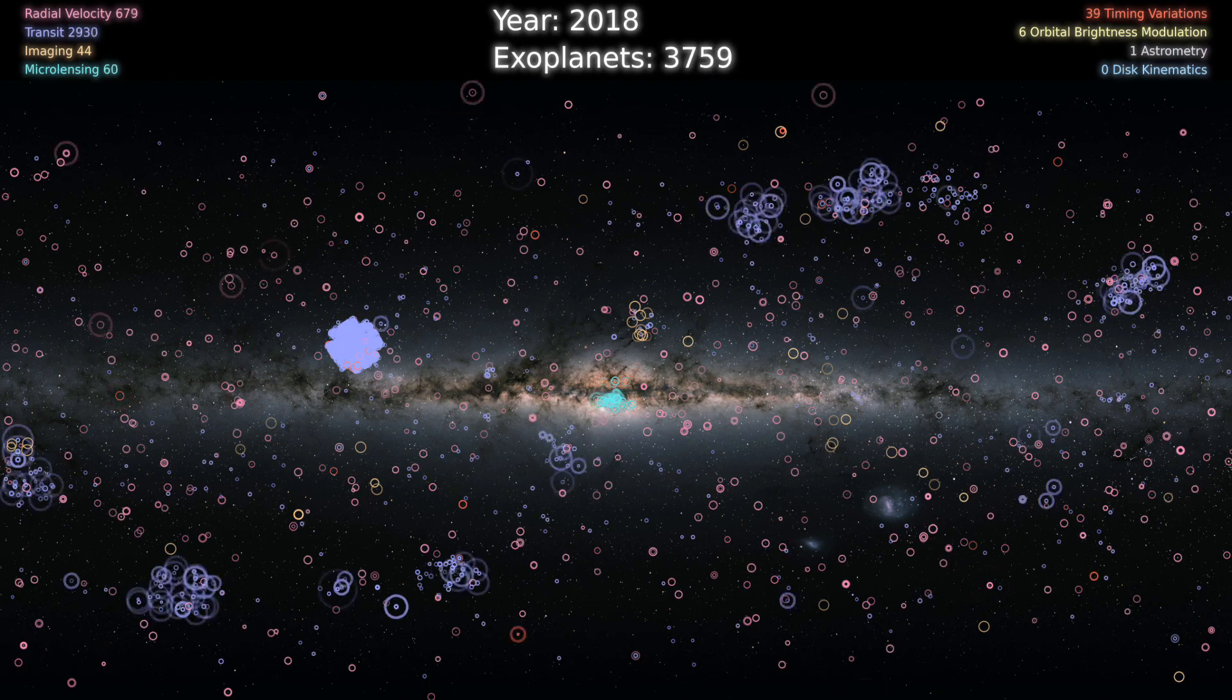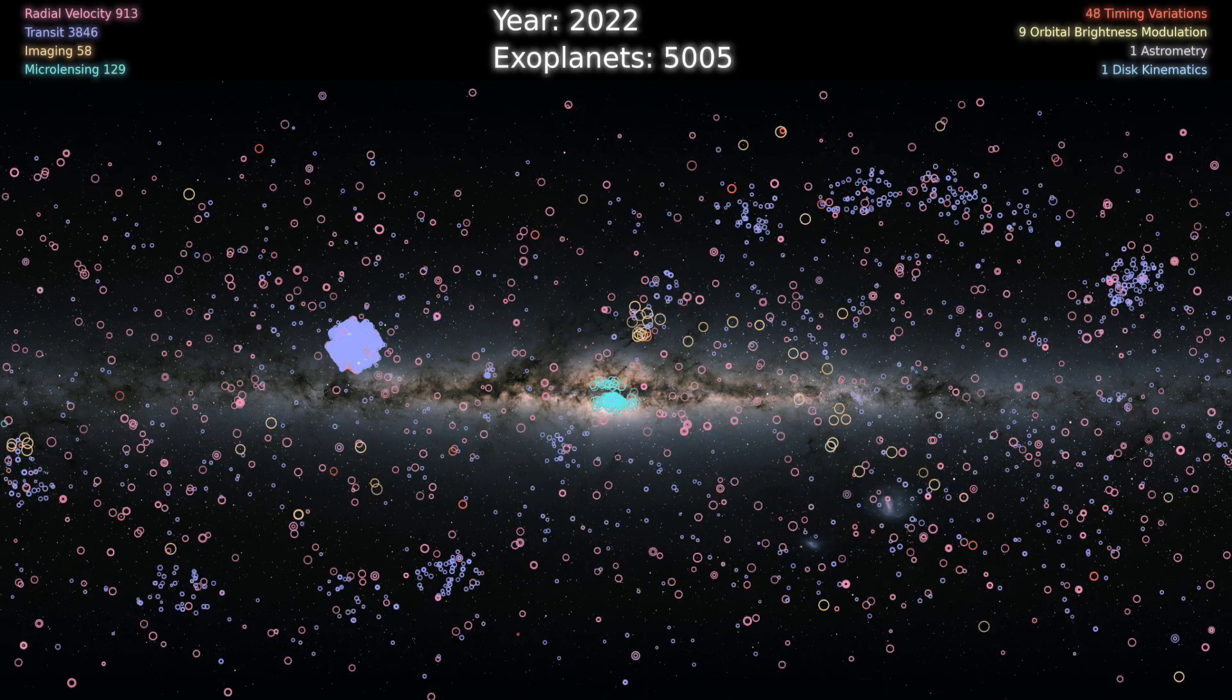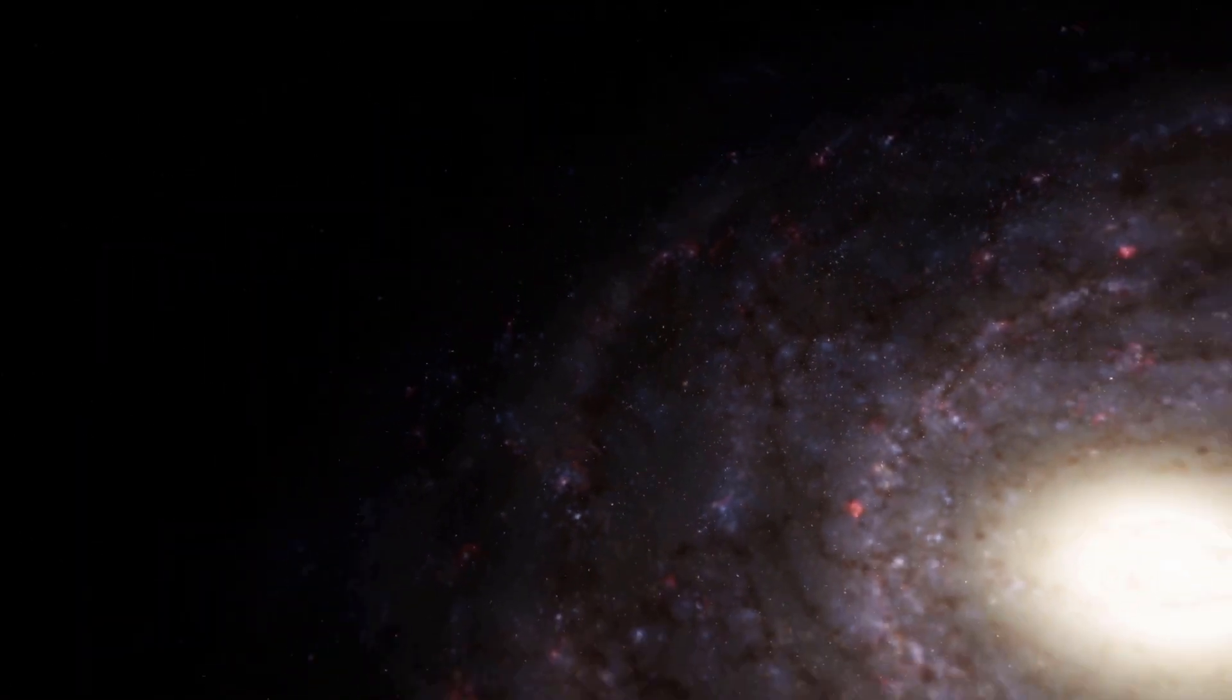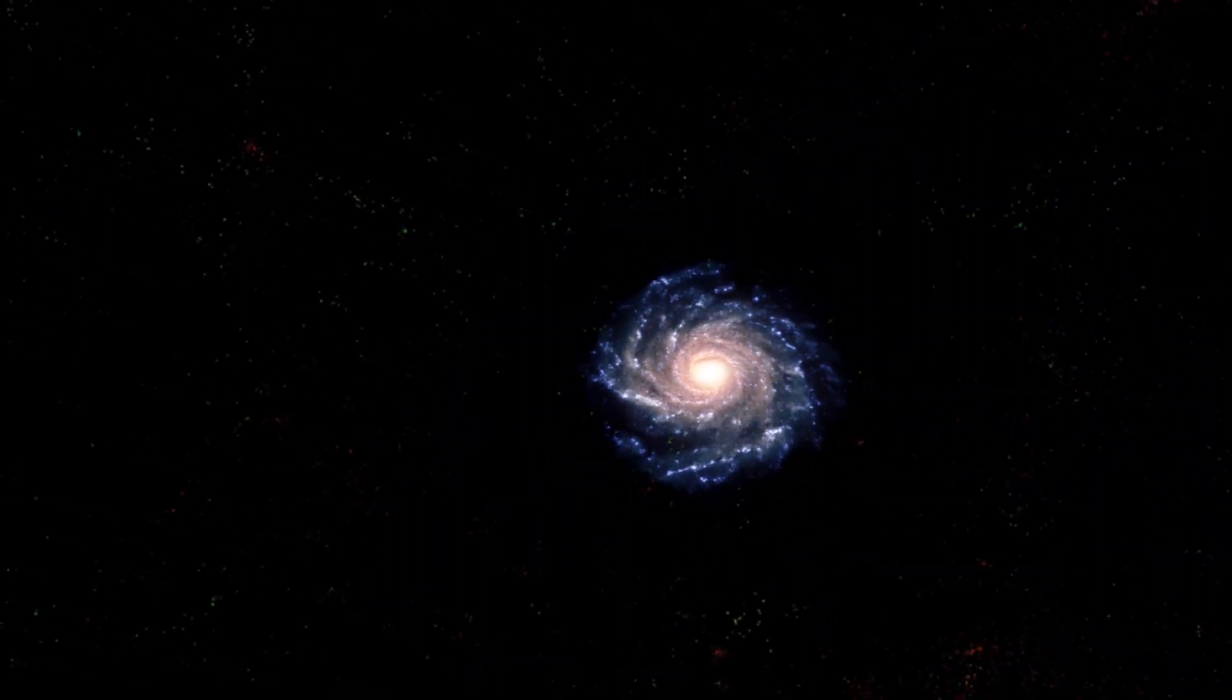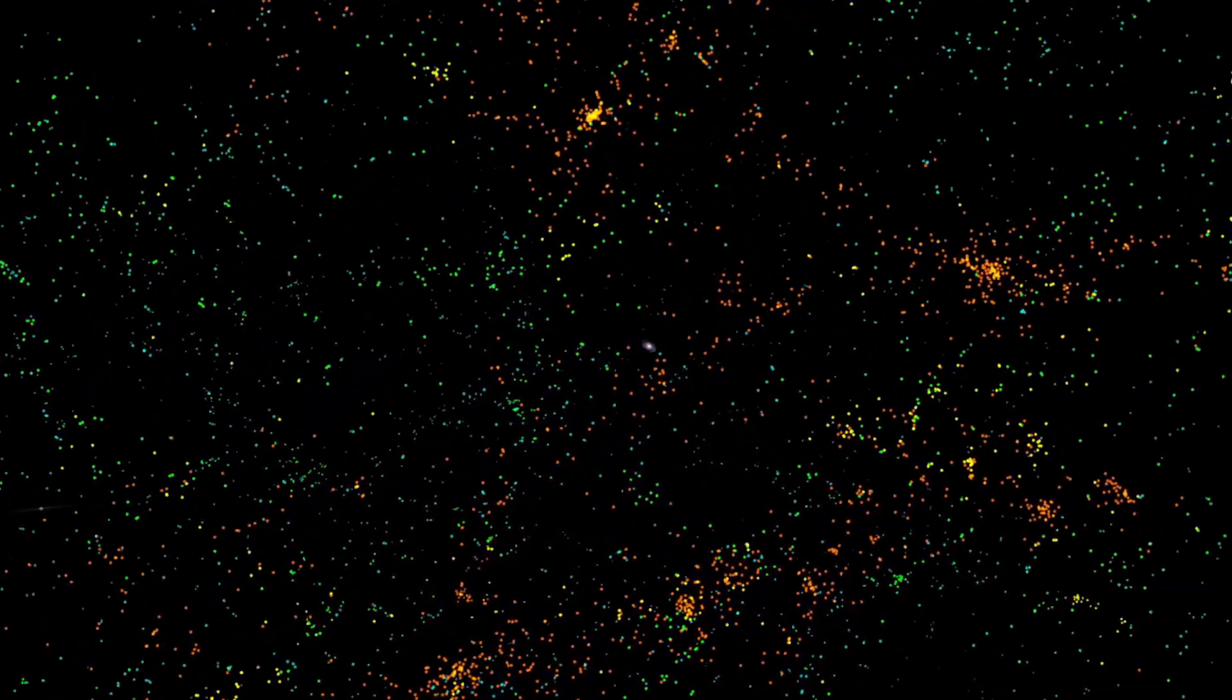Everywhere we've looked for planets, we've found them, and we're only just getting started. We've only searched about one one-millionth of our own galaxy, and there are trillions of galaxies.